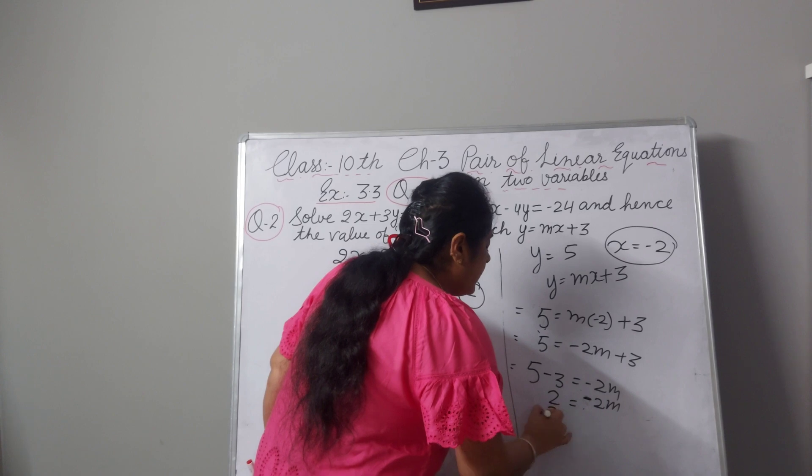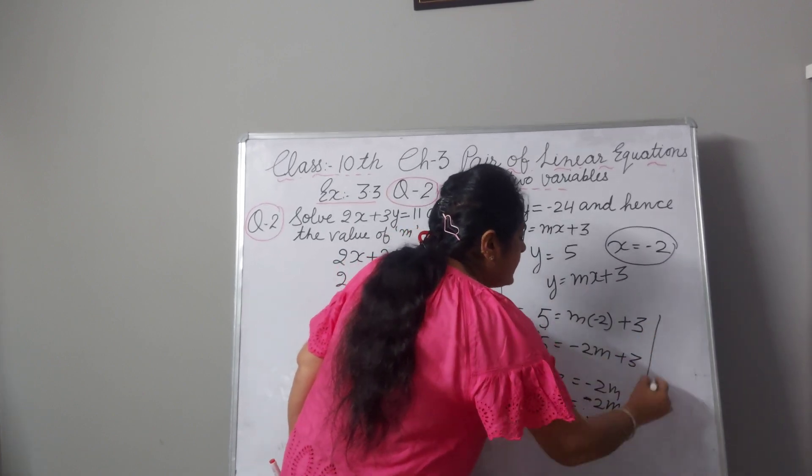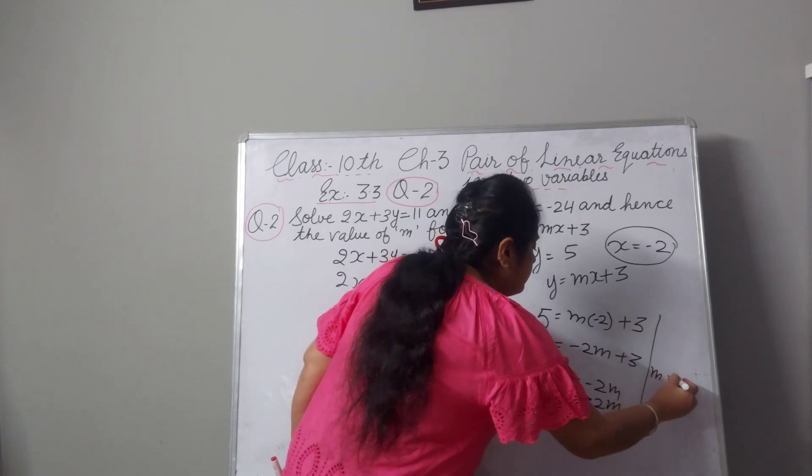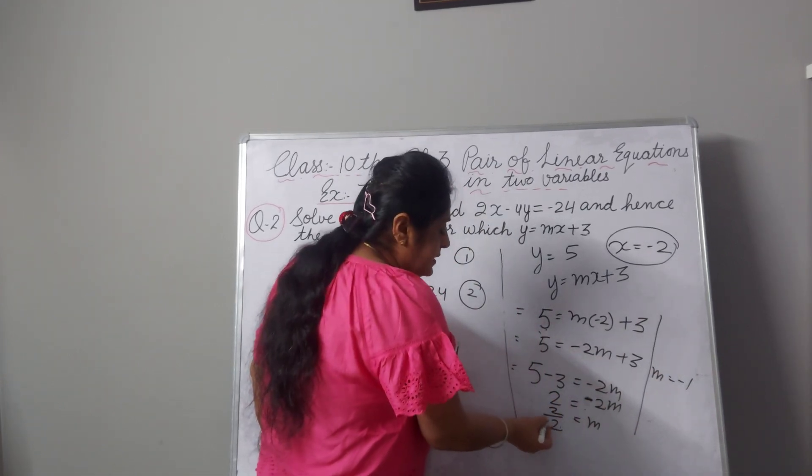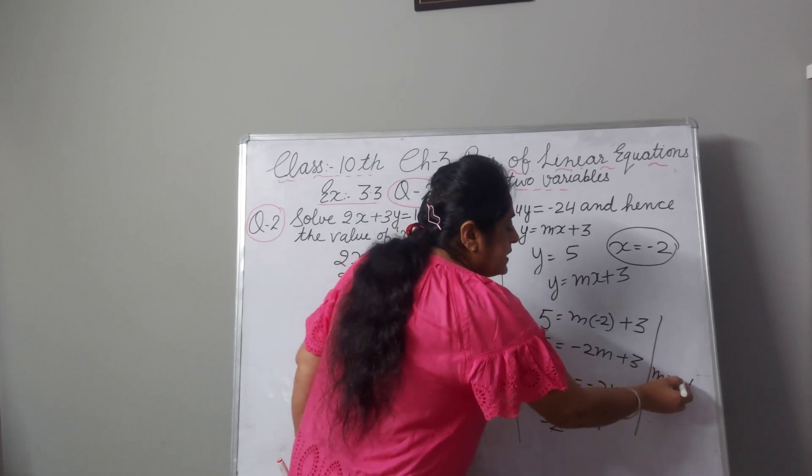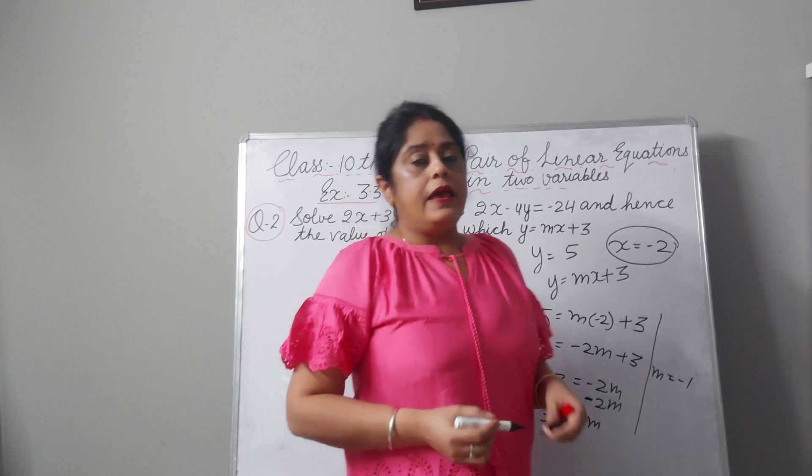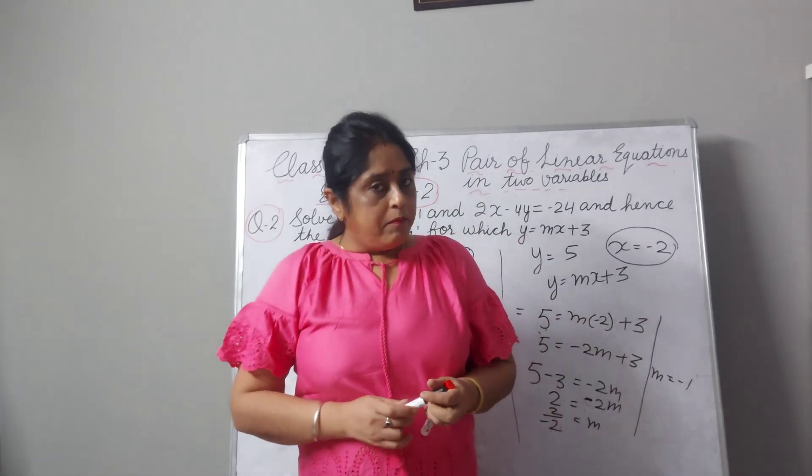2 divided by minus 2 equal to m. And we will get the value of m is minus 1. 2 and 2 will be cancelled and minus 1 will be left here. And we will write the sign here. Minus 1 by 1 is equal to minus 1 and m value we get it minus 1.